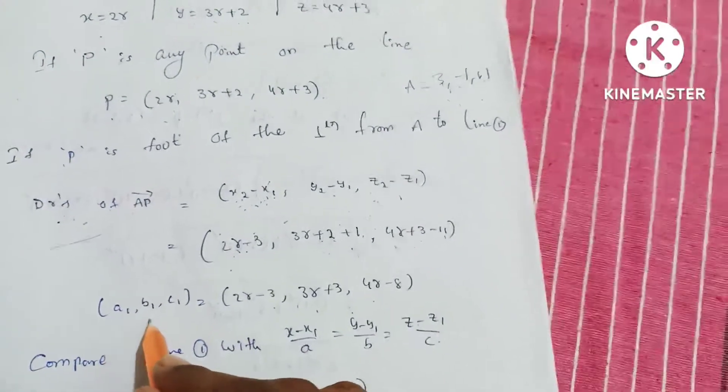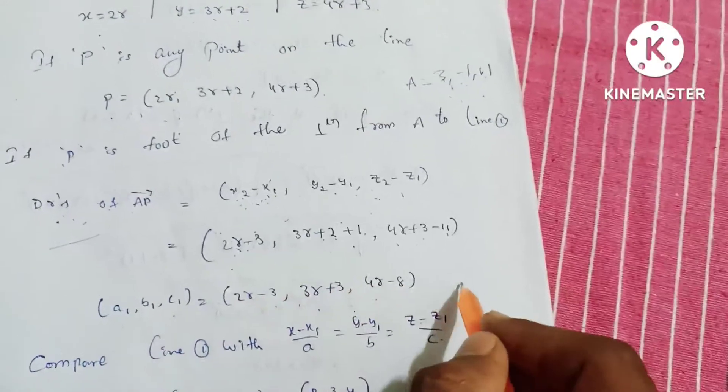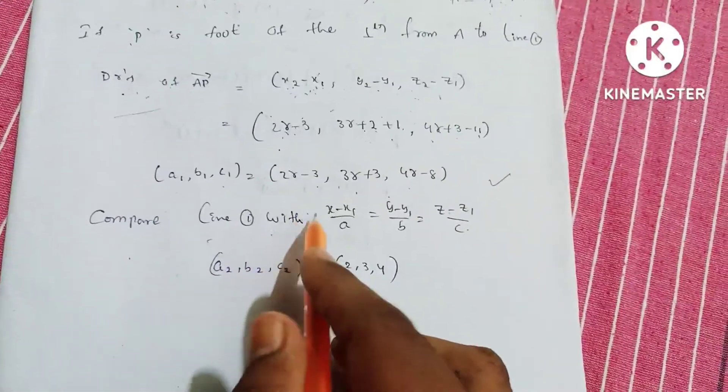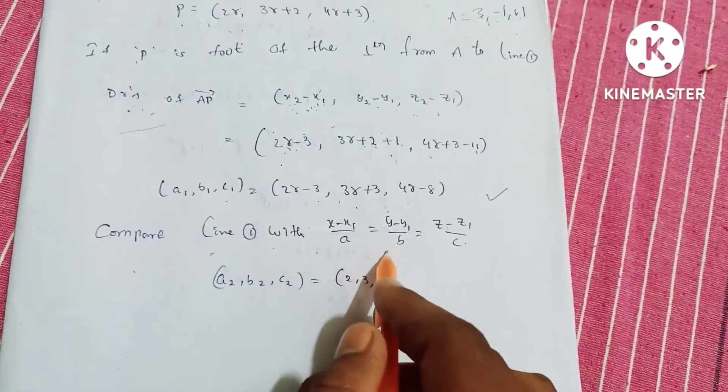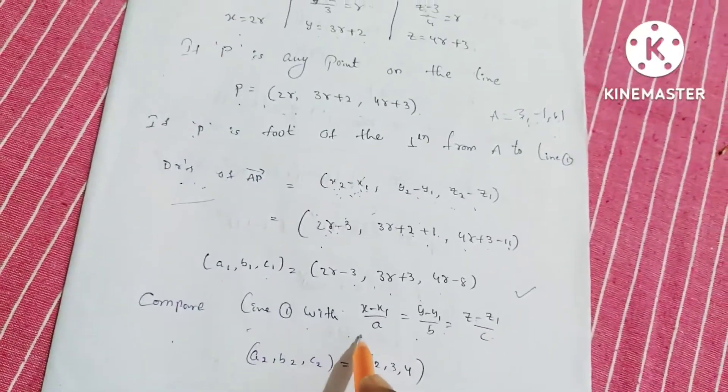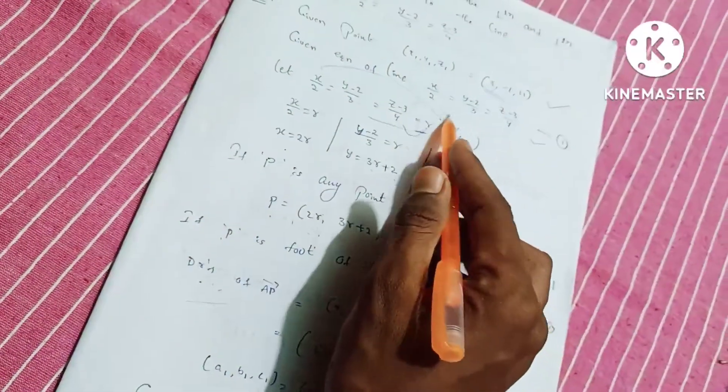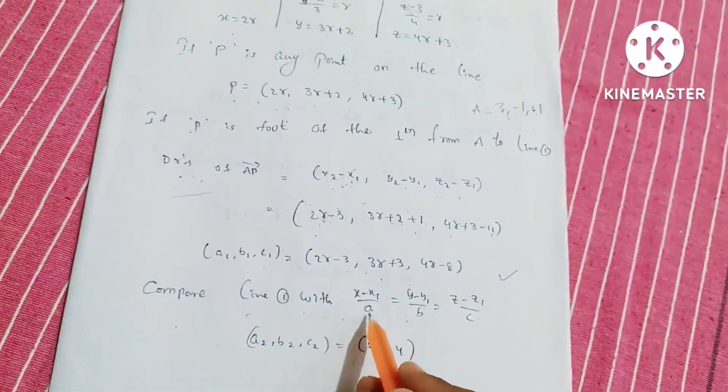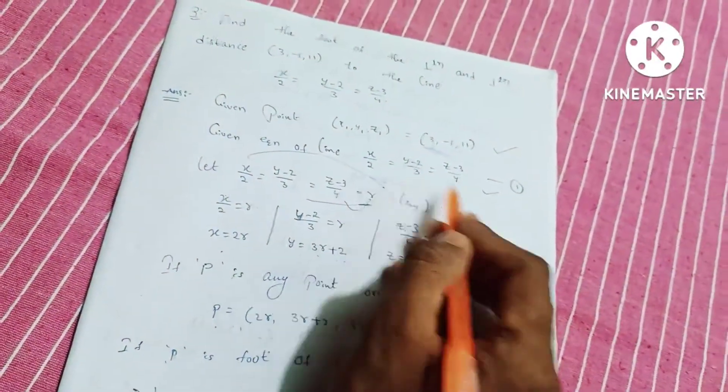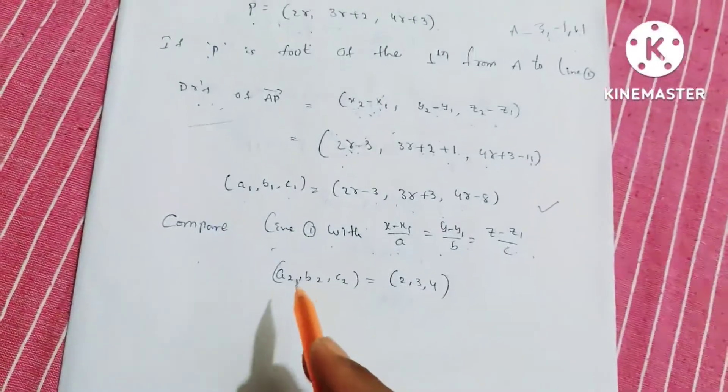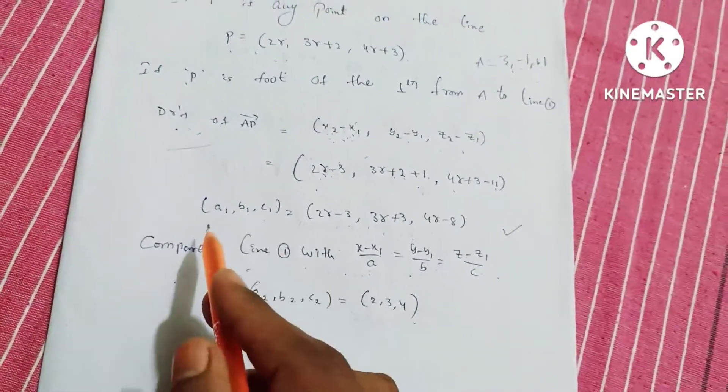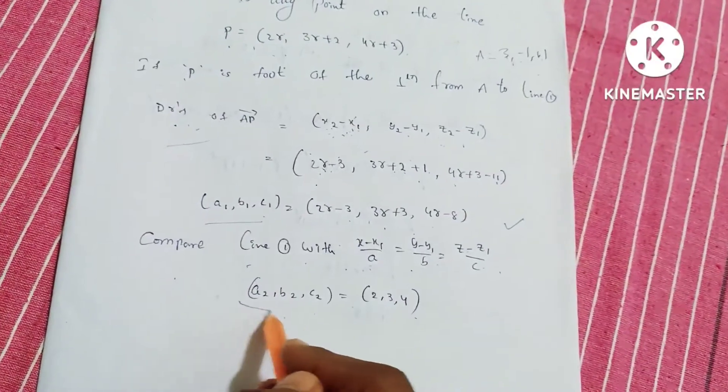If direction ratios are a, b, c values, so a1, b1, c1. Compare line 1 with (x-x1)/a = (y-y1)/b = (z-z1)/c. From our question's line equation, a2, b2, c2 is 2, 3, 4. So a2, b2, c2 equals (2, 3, 4).